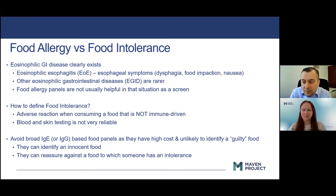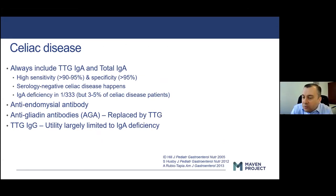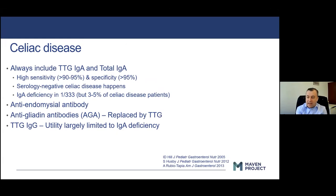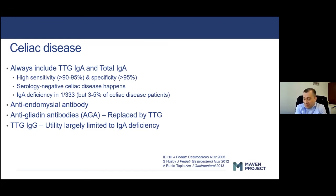Regarding the celiac testing question — the antibodies we've discovered for celiac are not causing the disease. Not everybody with celiac disease has these antibodies perfectly. About 5–10% of people with celiac disease have all negative antibodies yet respond to a gluten-free diet. If I could give someone a medication to specifically eliminate the antibodies, they'd still have celiac disease if they were eating gluten.